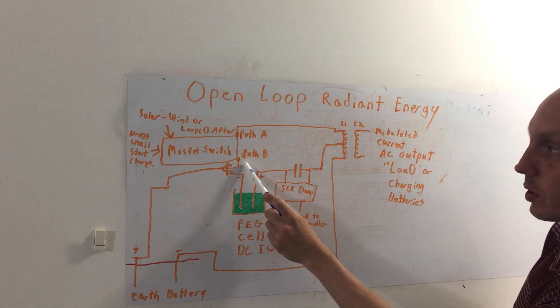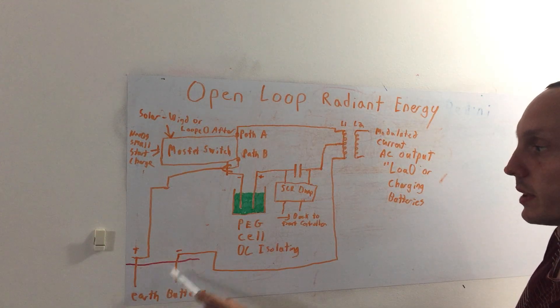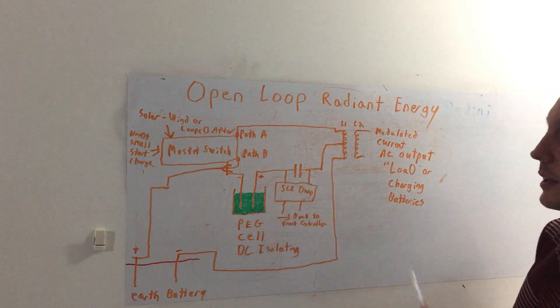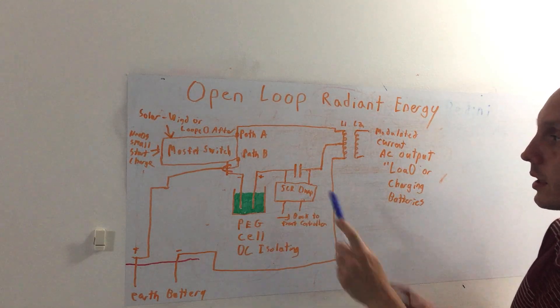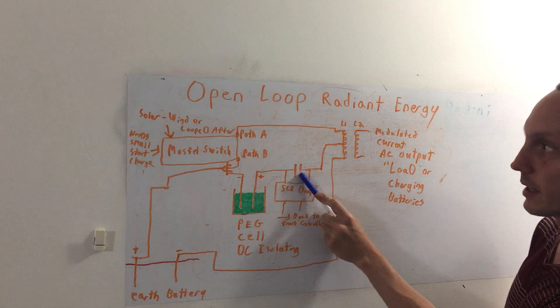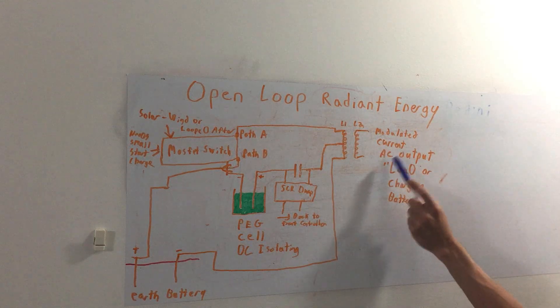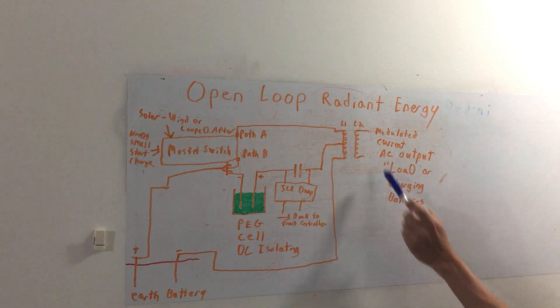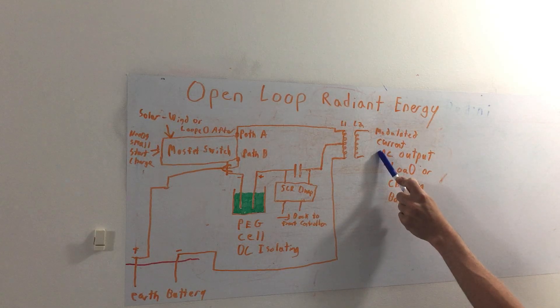Then it switches the path B which goes to the plus, so it puts it in series with the earth battery negative through the coil and back into the SCR. By continuously switching it like this, you get a continuous displacement that could charge this capacitor. And you introduce modulated current and AC output on the L2 coil. So your official load or charging batteries can be outputted over here.